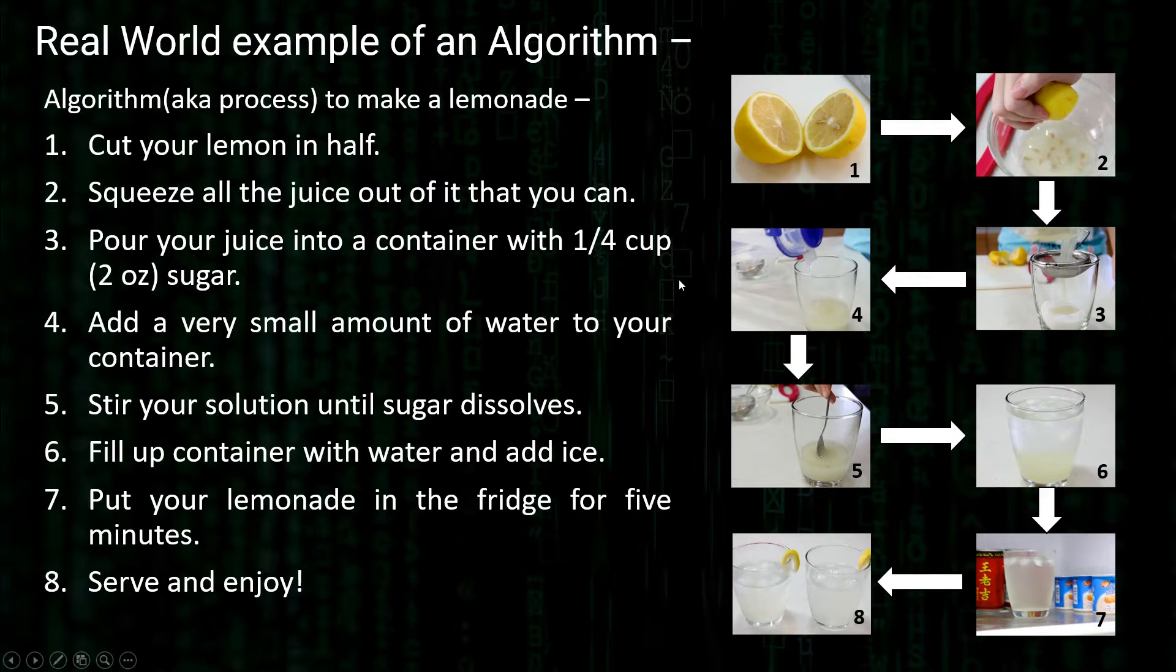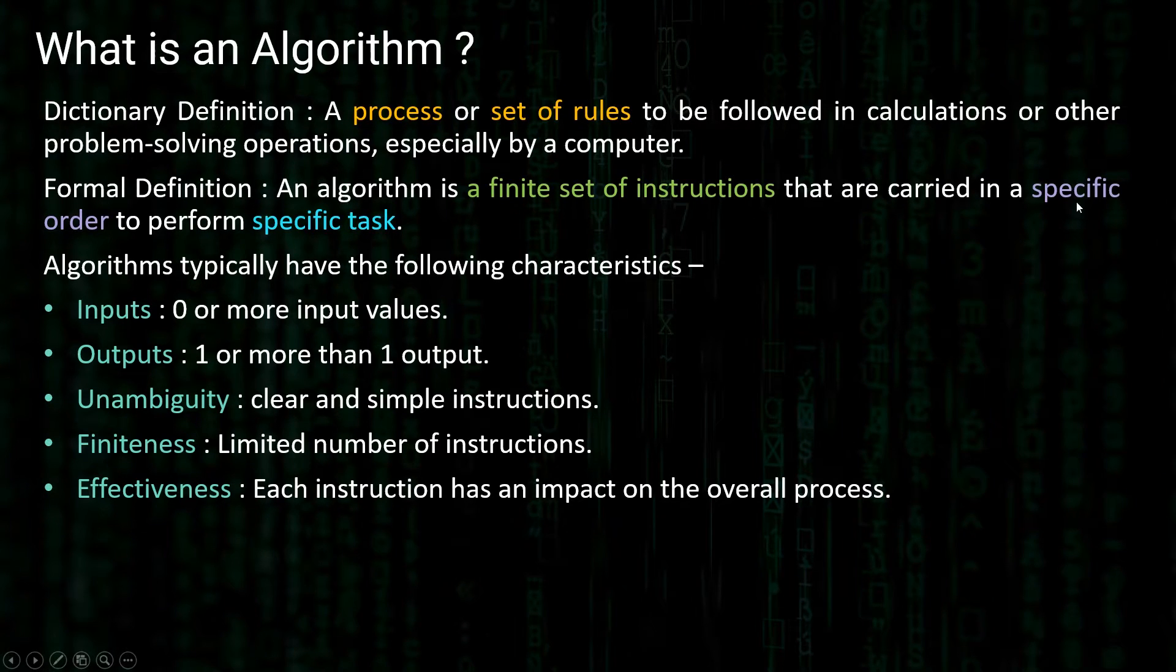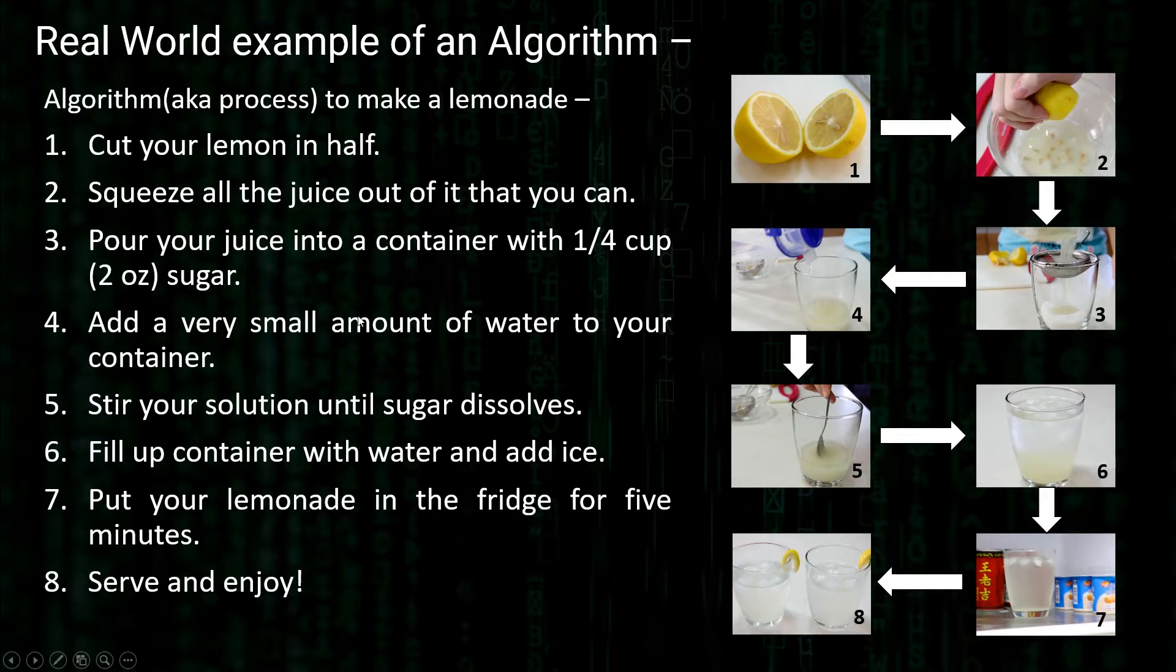This was a very simple real world example which showed you a process of making lemonade. This process can be compared to an algorithm also, because by the definition of algorithm, it's a finite set of instructions that are carried in specific order to perform a specific task. We have eight instructions basically which are carried in a specific order. You cannot perform step five before you do step four. The inputs were lemon, water and ice, but the output was lemonade. So we got some input, we got some output also.